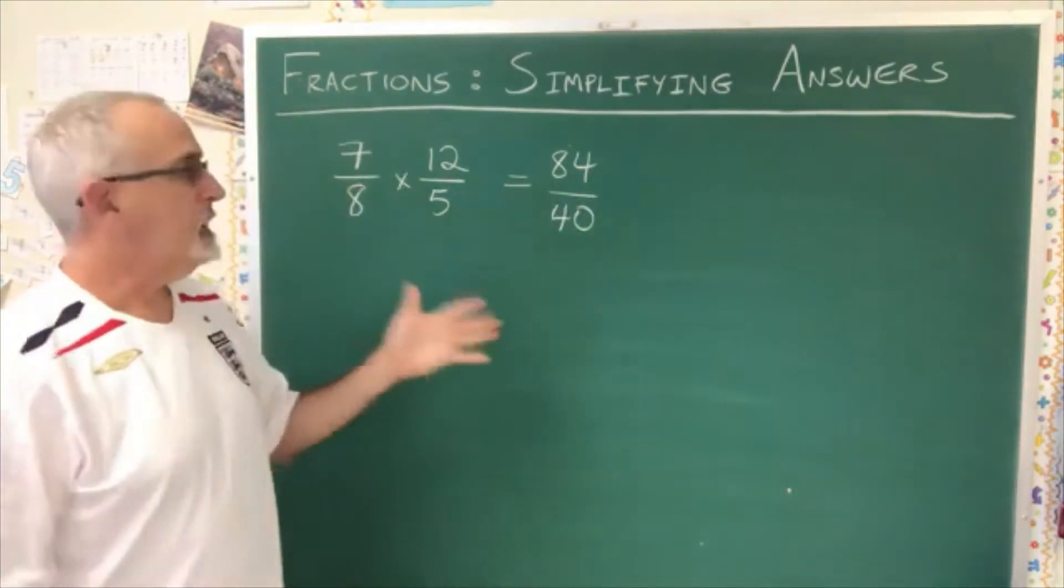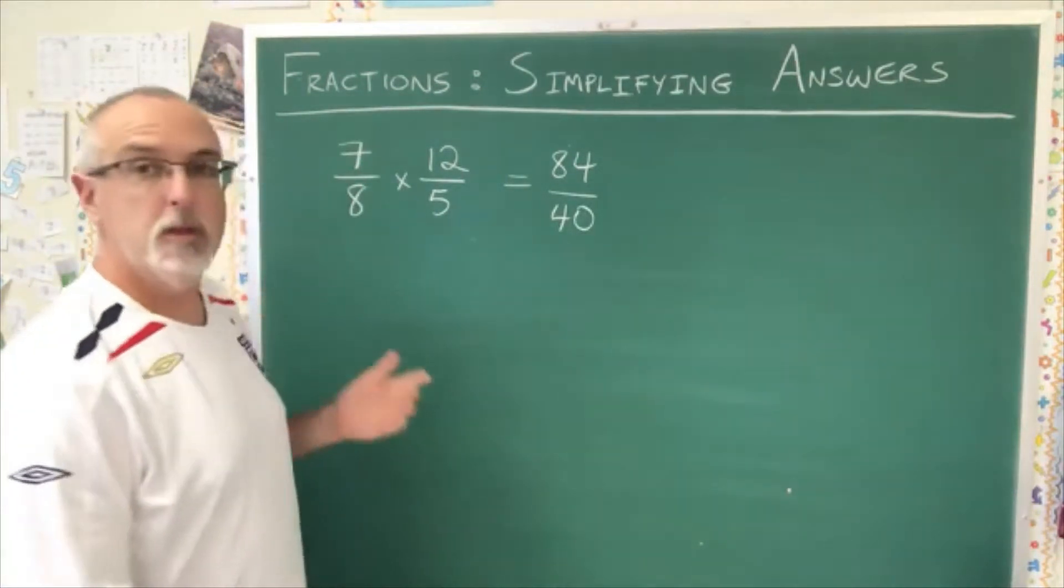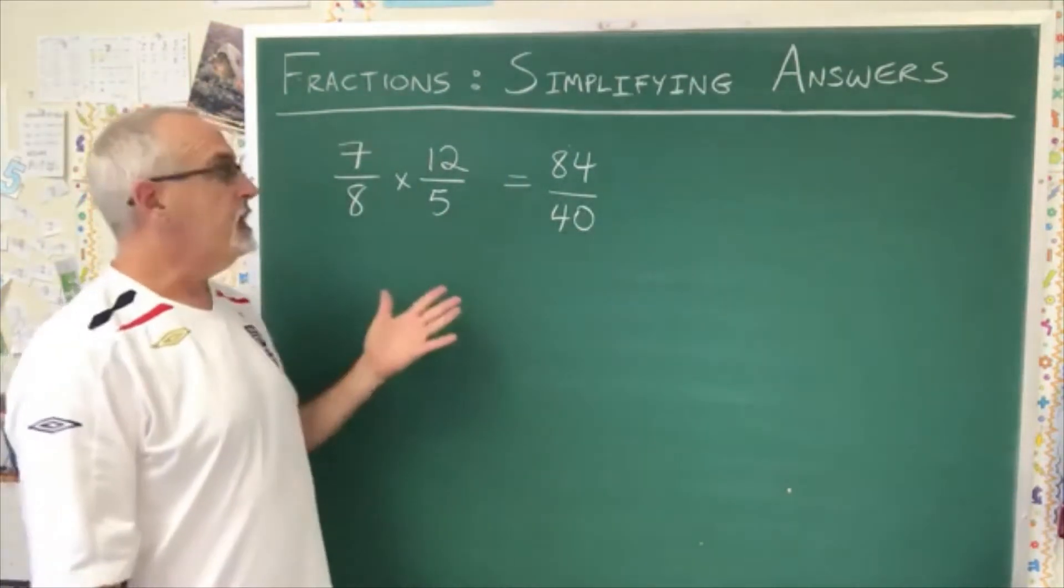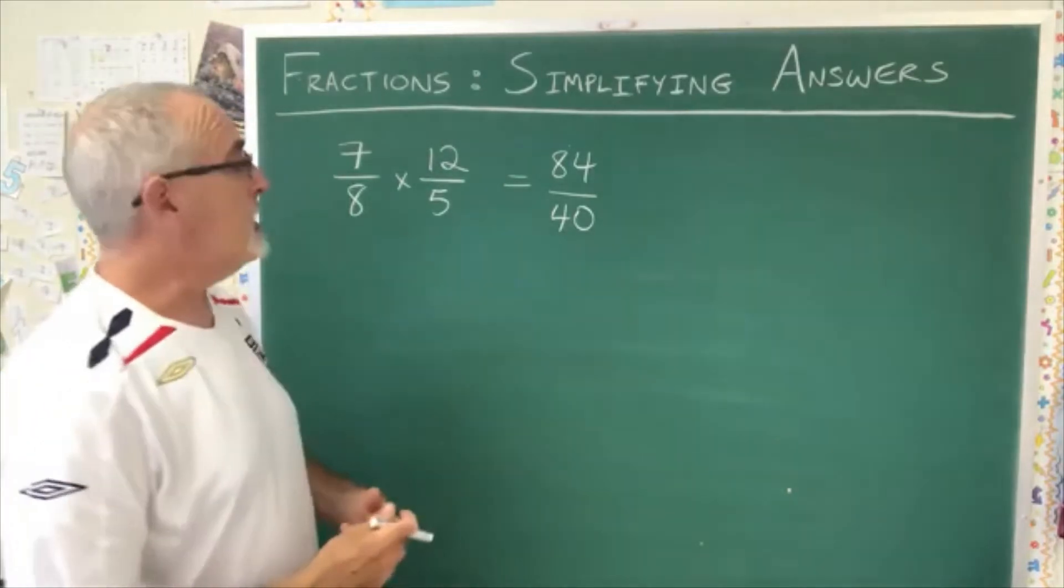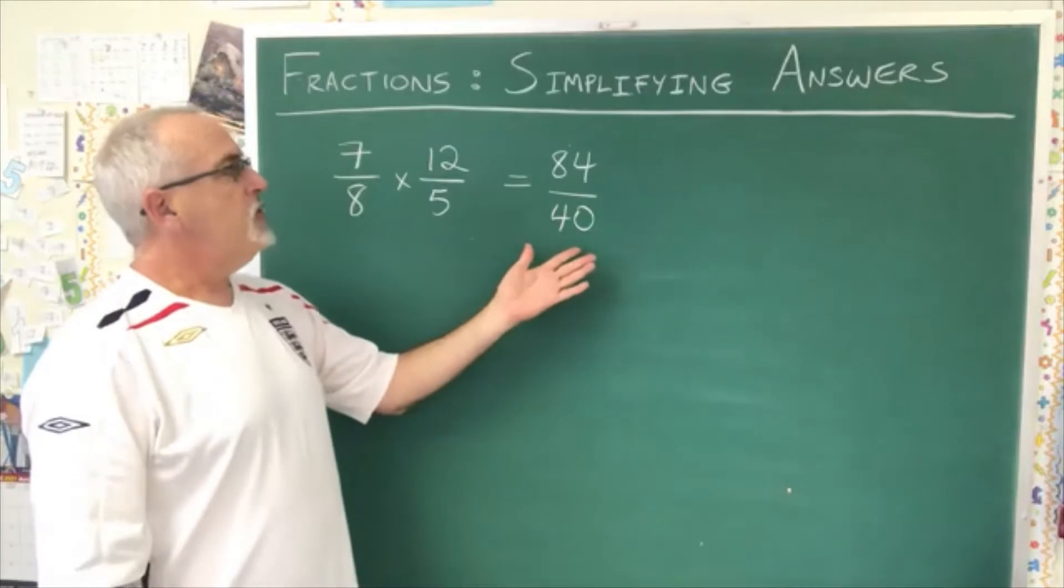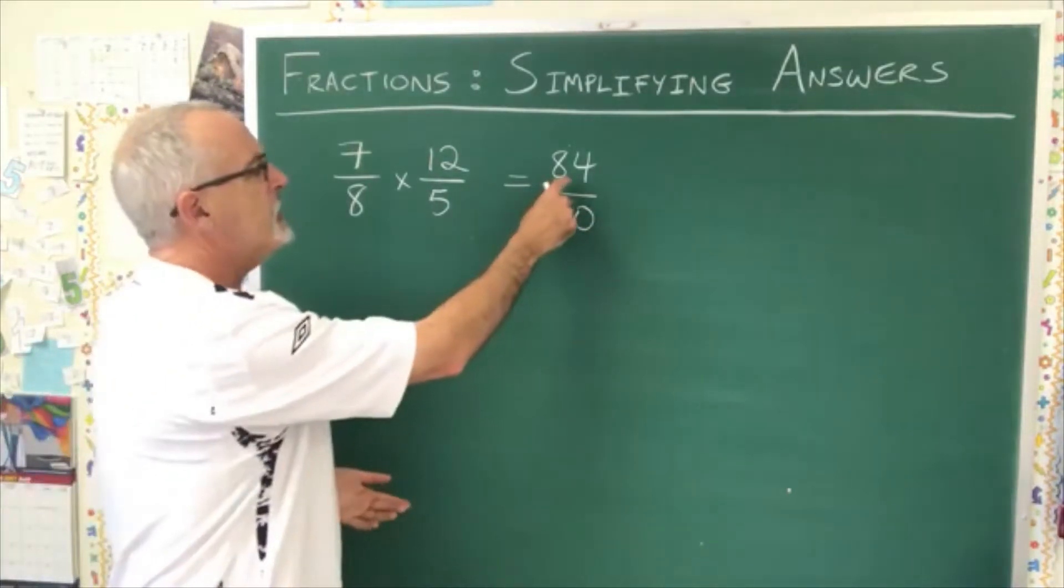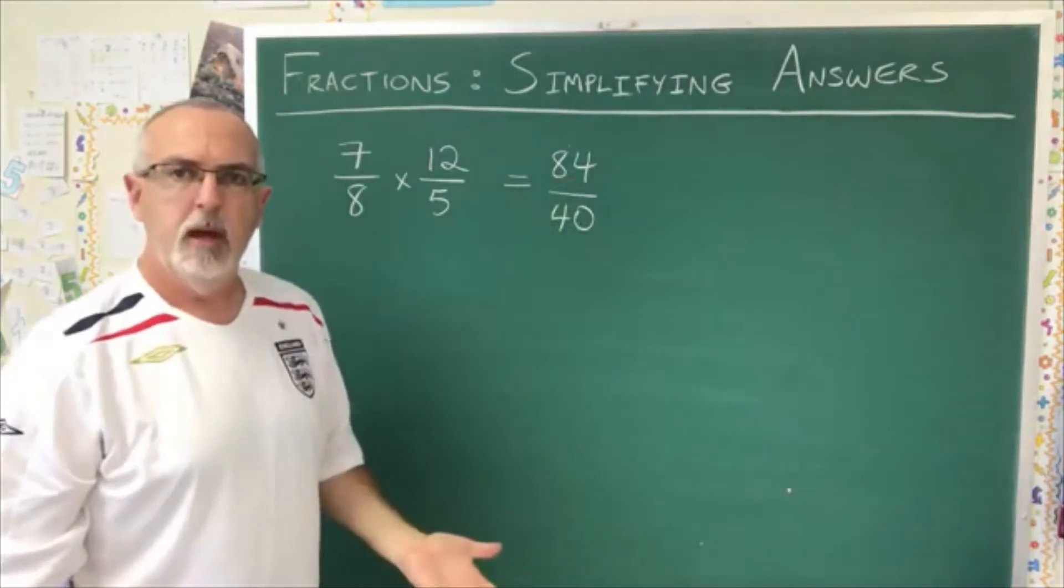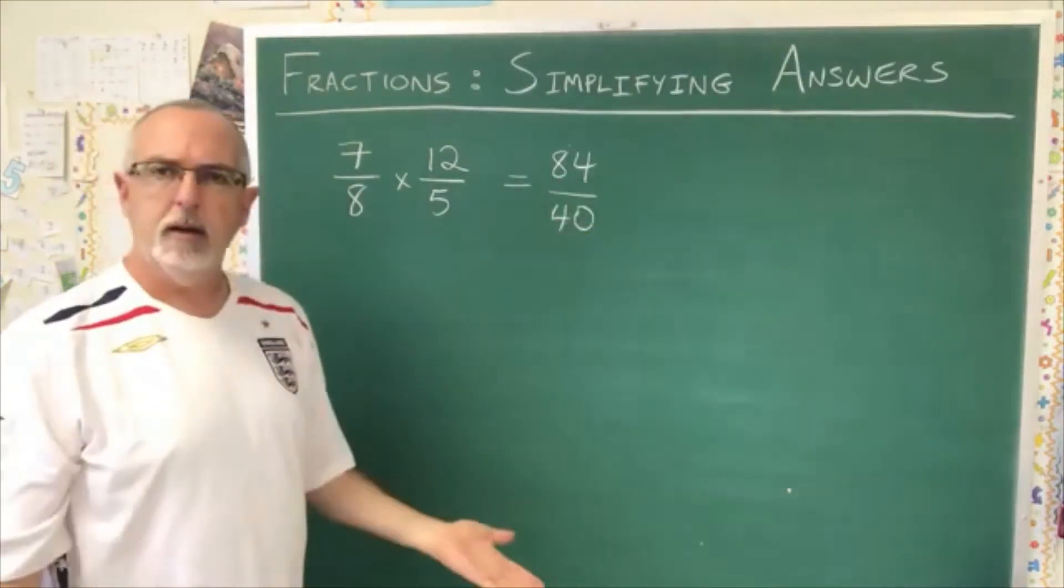We have an answer and it's a correct answer but it's not simplified. And if you're doing this type of course where you have to simplify your answers in order to get full marks, well you want to do it. What should I do first to this though because there's two different things to do. I can convert the improper fraction into a mixed number and I can reduce the fraction because 84 and 40 have a common factor.